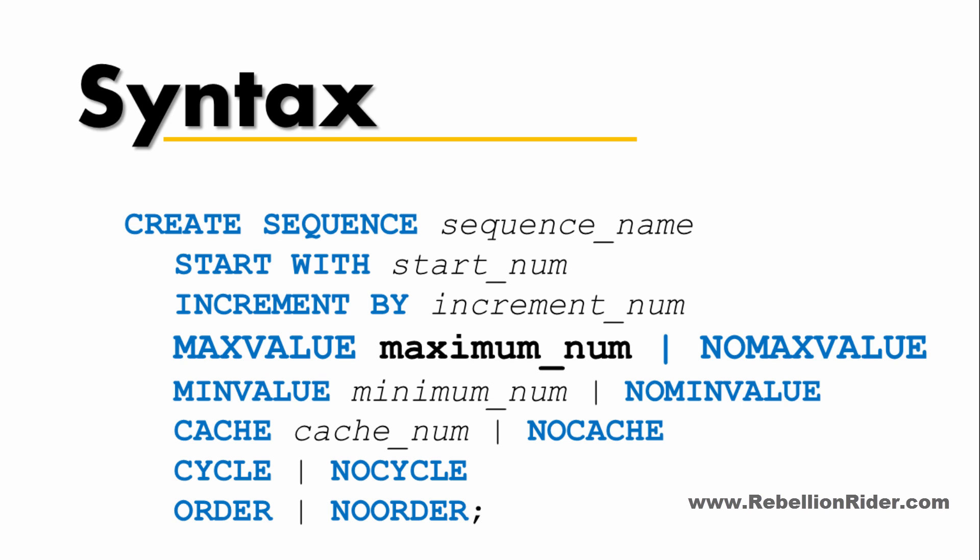The next attribute is MAXVALUE or NO MAXVALUE. Using these attributes you can set the maximum upper bound for your sequence. Always remember MAXVALUE must be equal to or greater than START WITH and must be greater than the MINVALUE attribute. In case you don't want to set a MAXVALUE for your sequence then you can use the NO MAXVALUE attribute.